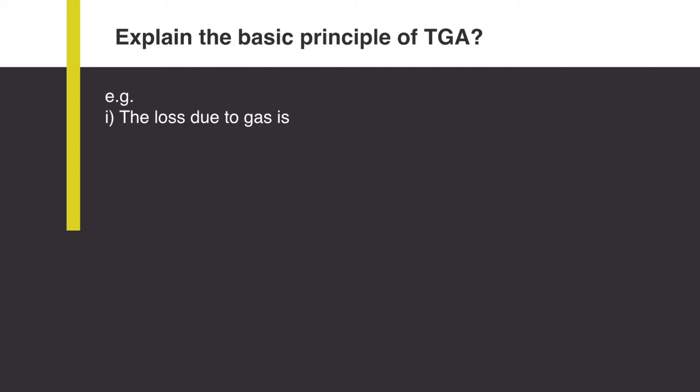For example, the loss due to gas: calcium carbonate when heated produces calcium oxide and carbon dioxide is emitted out.